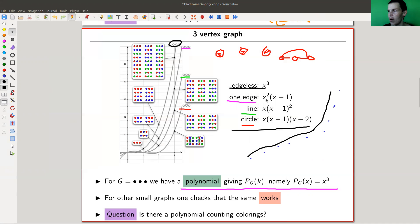I've written down the polynomials that the same works in general. So one edge, for example, needs to have a root at x equals one, because one edge means you can't have a one coloring. Similarly, a line can't have a one coloring. A circle can't have a one coloring.